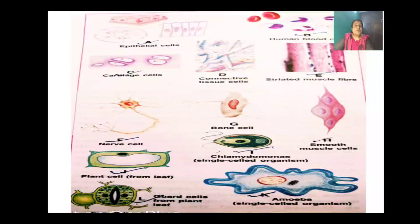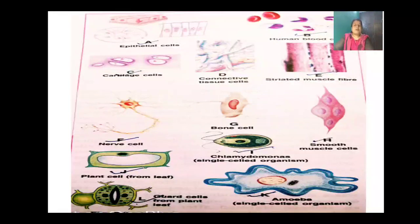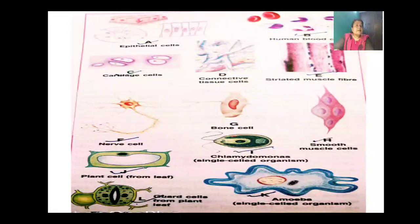The nerve cells are the longest cells. Their main function is to conduct impulses from distant parts of the body to the brain and vice versa, since they are the main functional unit of the nervous system. So they are the longest cells and their shape is thread-like. The muscle cells are long and contractile to pull or squeeze the body parts; they facilitate contraction and movement in the body.